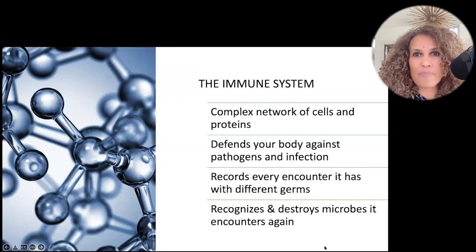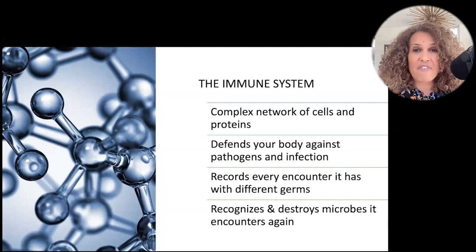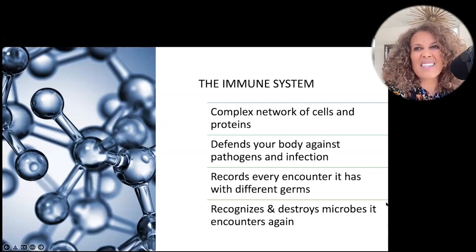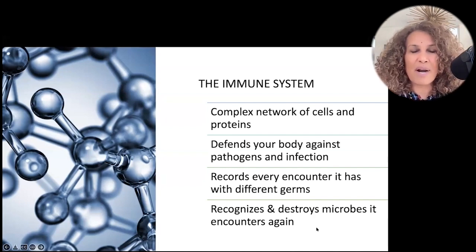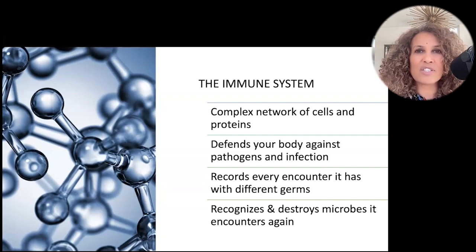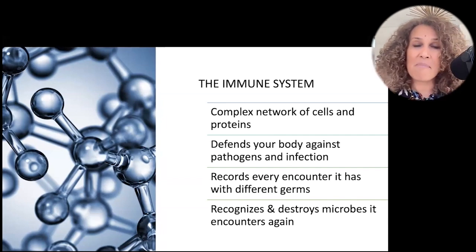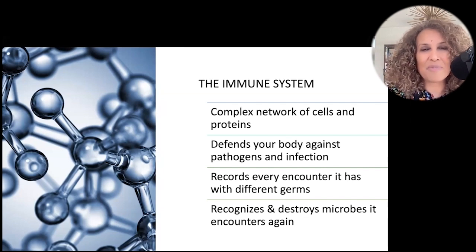The immune system is a network of cells and proteins that defends your body against pathogens, infection, and also against cancer. Our adaptive immune system — the one that's learned — records every encounter it has with different germs and has a library that can recognize and destroy those microbes when encountered again. Remarkably, if you are breastfeeding your baby and the baby is exposed to an infection, your breast milk changes — it selects the right antibodies for whatever infection your baby has. With COVID, mothers who've had COVID can pass on those antibodies to their baby so the baby is immune.